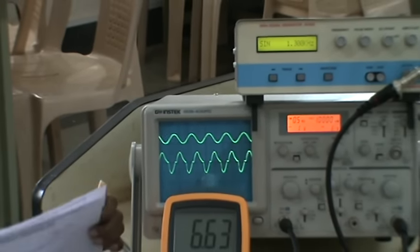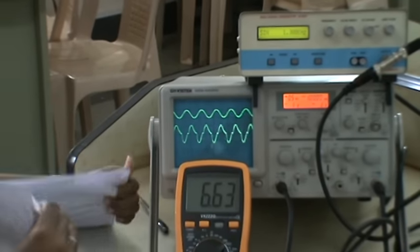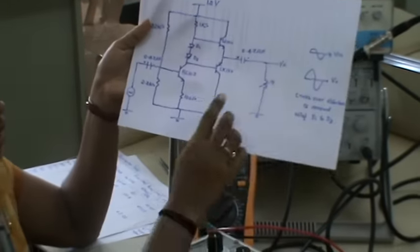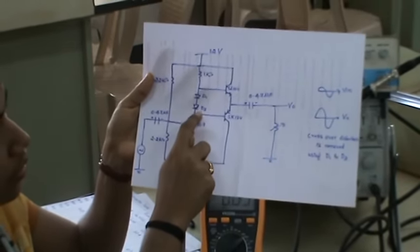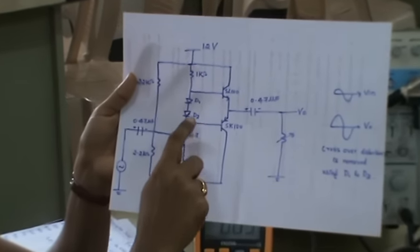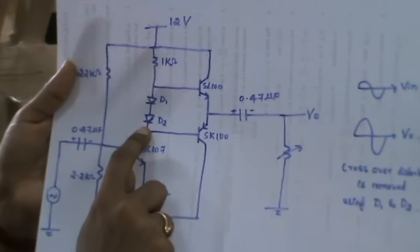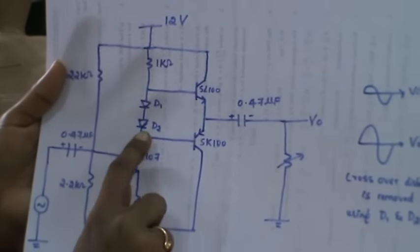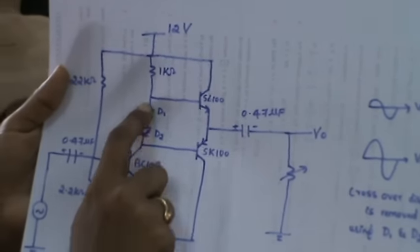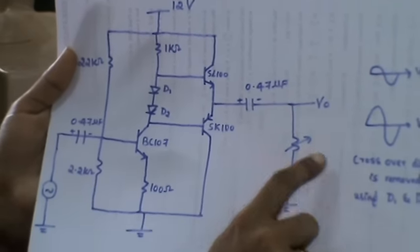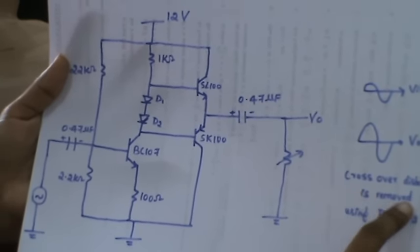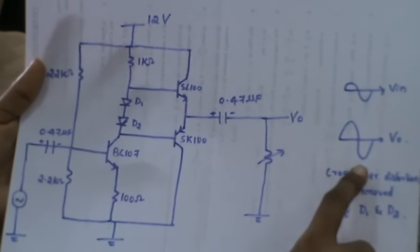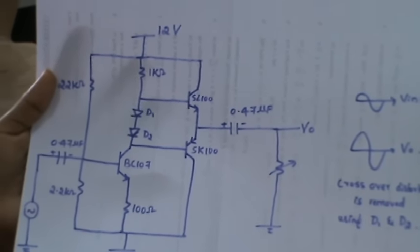We can remove the crossover distortion by using diodes. Here when we get the output, we get inverted output. According to that, for the positive half cycle this diode conducts as it is connected in series. According to that, the output we get, the crossover distortion is removed by using D1 and D2, so we get amplified output.